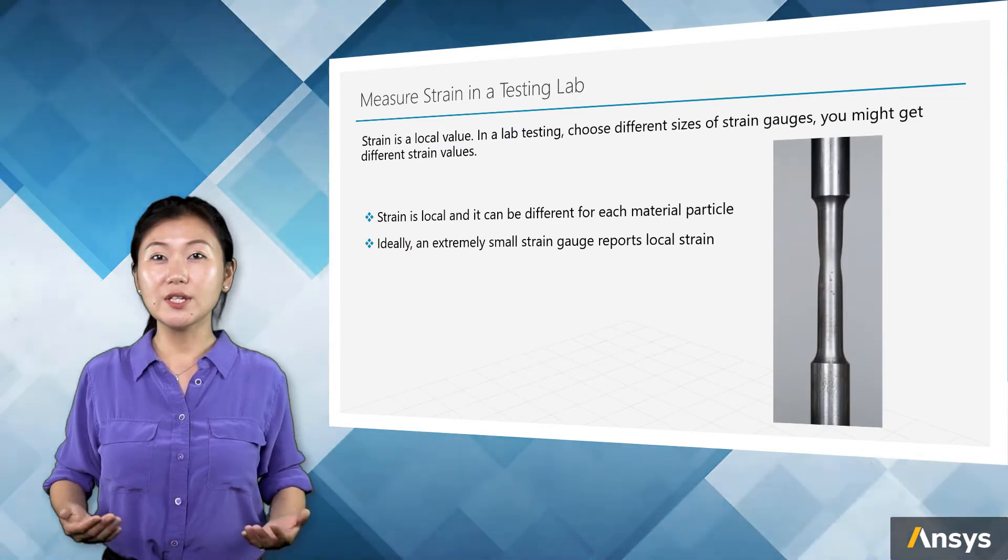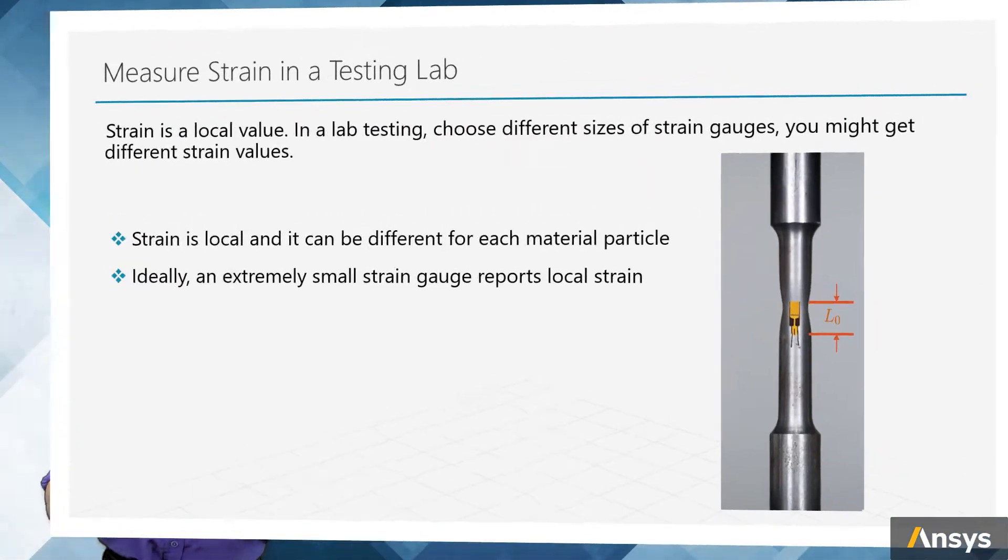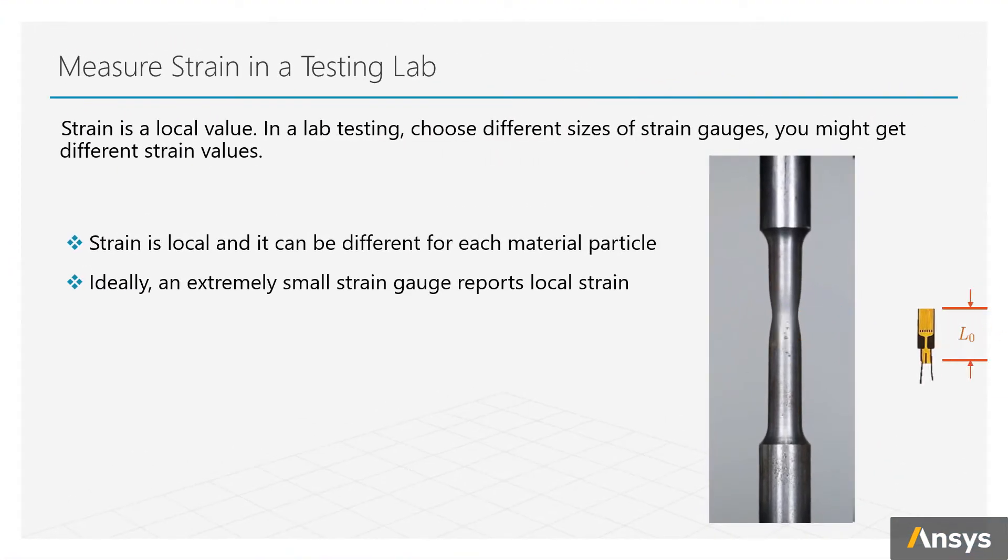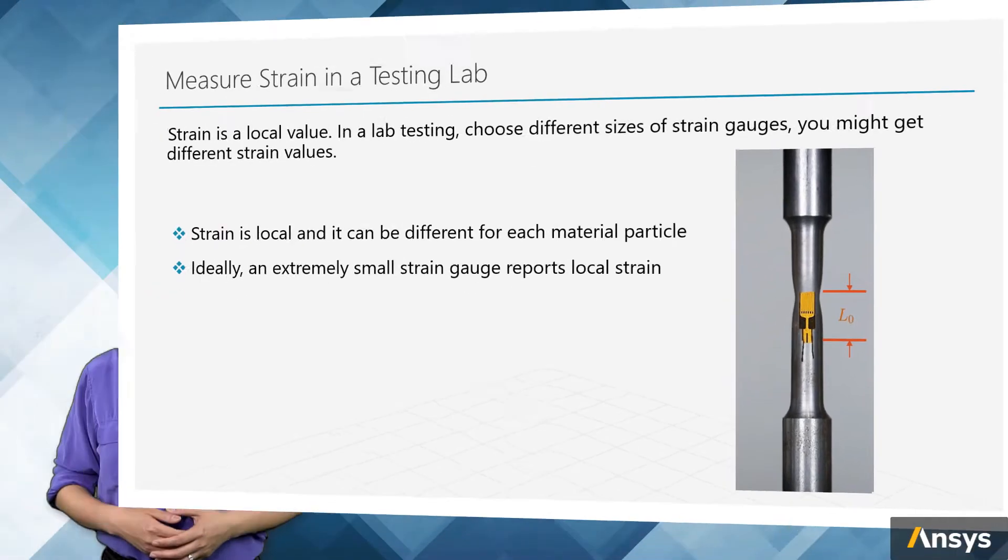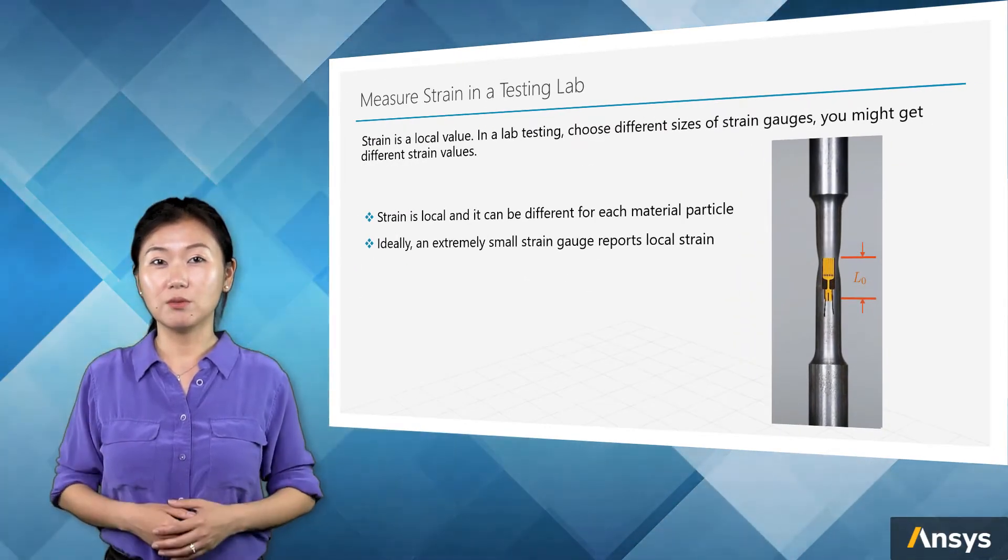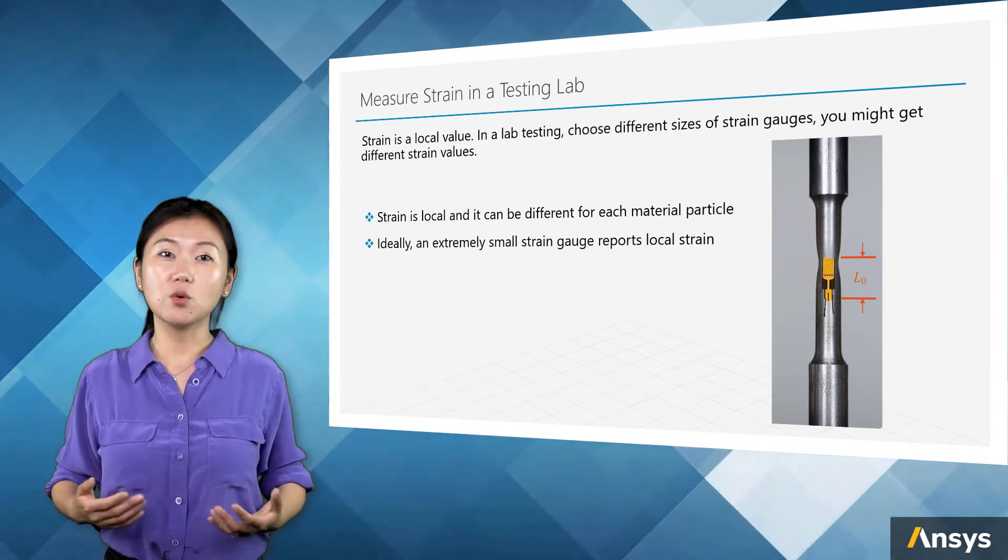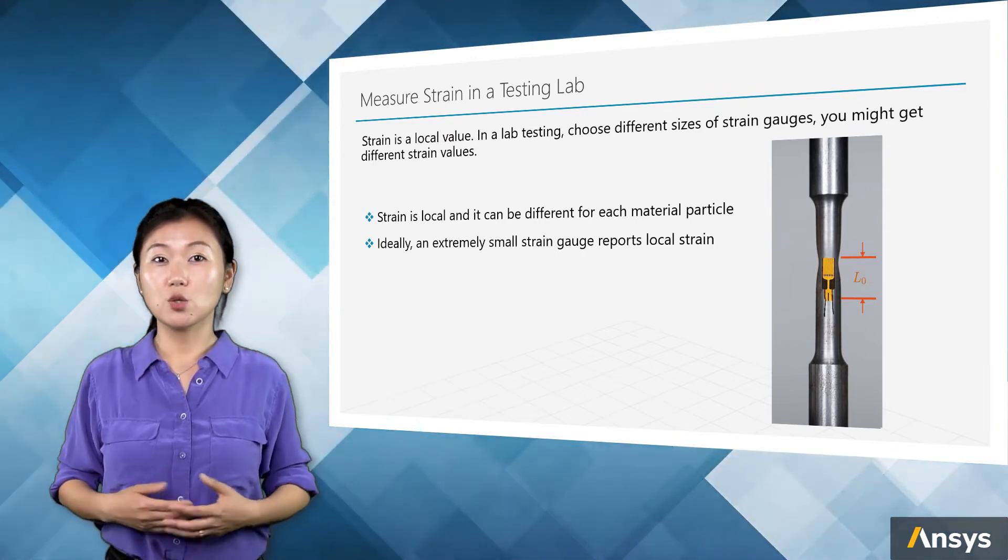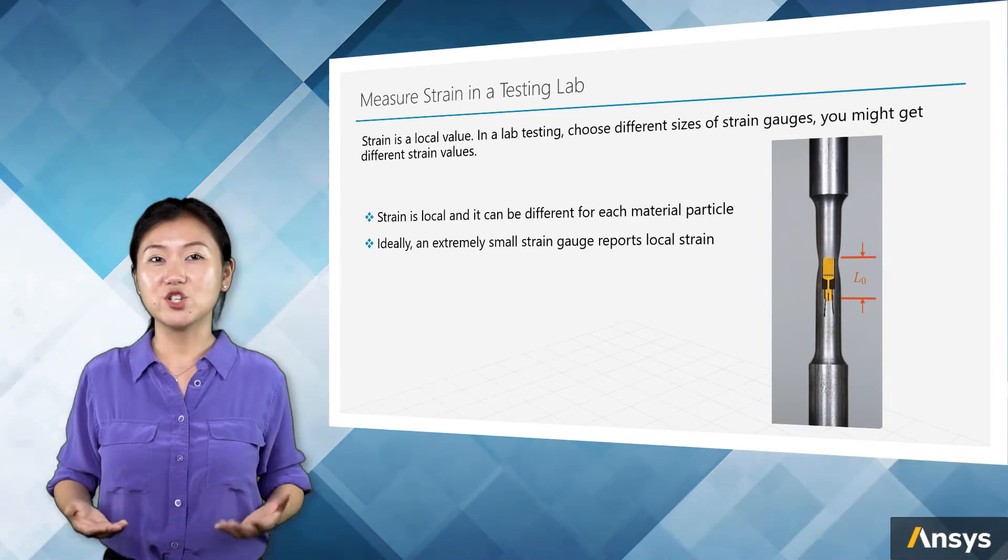In one test, using different size of strain gauge, you might get different strain values. Strain is local. Each material point over the volume has its own strain value. Ideally, if there is an extremely small strain gauge, it can report the accurate local value. But in real life, there is always a size for the strain gauge, so what is reported will be an average strain.